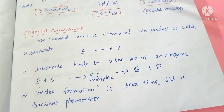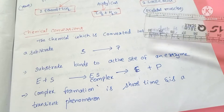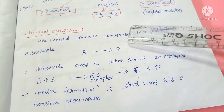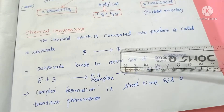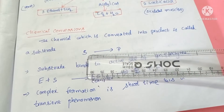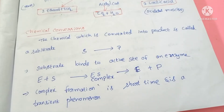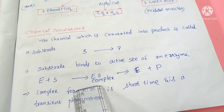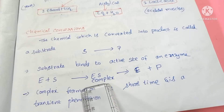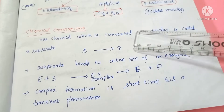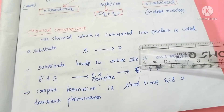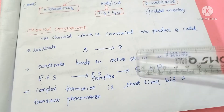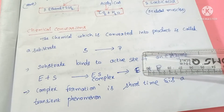Hello everyone, this is Lata Akula. In this video we are going to study about the next part of enzymes, that is chemical conversions. The product is formed from the substrate — the substrate is converted into the product. The substrate binds to the active site of an enzyme and forms the enzyme-substrate complex, which later forms the enzyme-product complex. From that, the enzyme and product get separated; the product is released into the surrounding environment and the enzyme is freed up, ready to meet another molecule of the substrate.